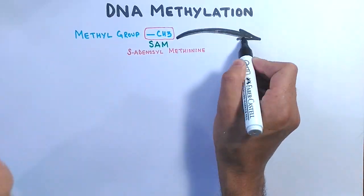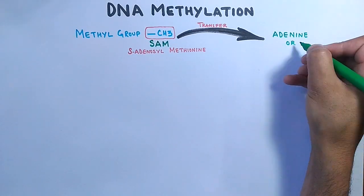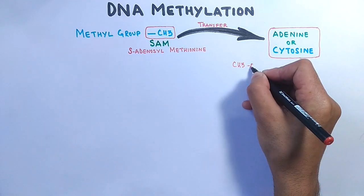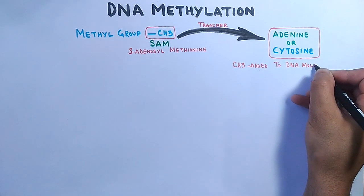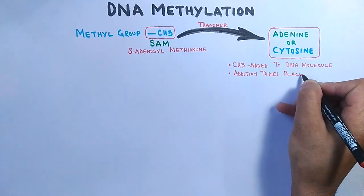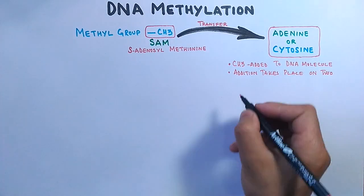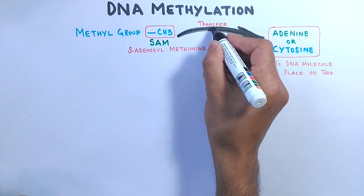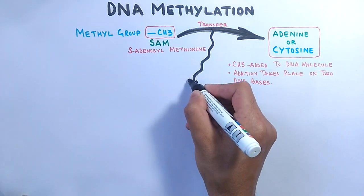DNA methylation involves the transfer of a methyl group to adenine or cytosine bases of DNA. This addition takes place on two DNA bases — adenine and cytosine — so we can say methylation takes place on two DNA bases among the four.